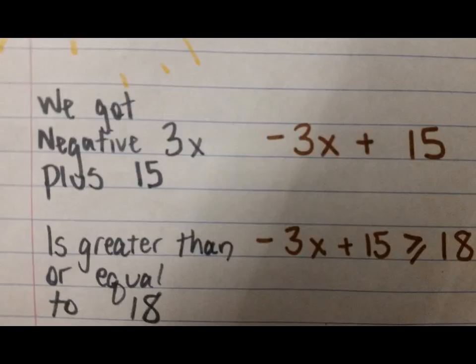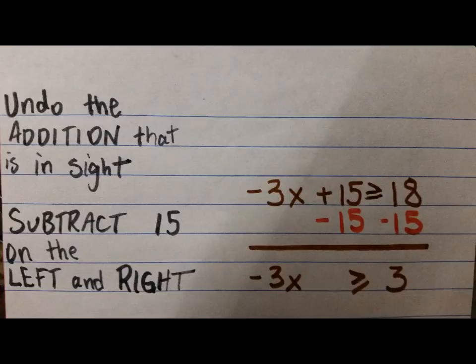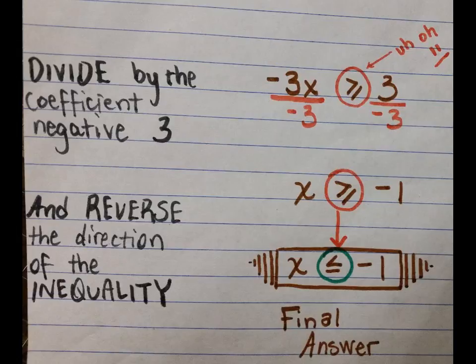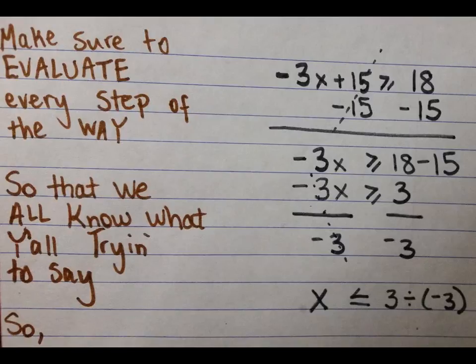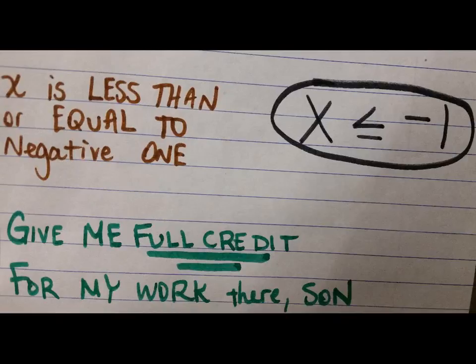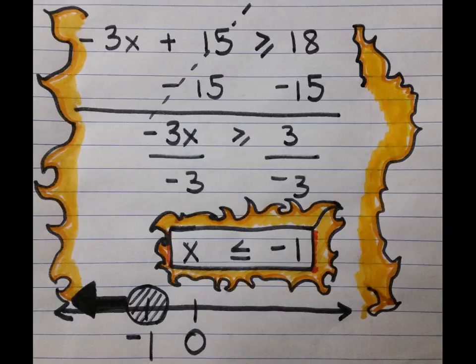Let us solve a problem together, turn the rain around and brighten up the weather. We got negative 3x plus 15 is greater than or equal to 18. Undo the addition that is in sight, subtract the 15 on the left and right. Then divide by the coefficient negative 3 and reverse the direction of the inequality. Make sure to evaluate every step of the way so that we all know what y'all trying to say. So x is less than or equal to negative 1. Give me full credit for my work there, son.